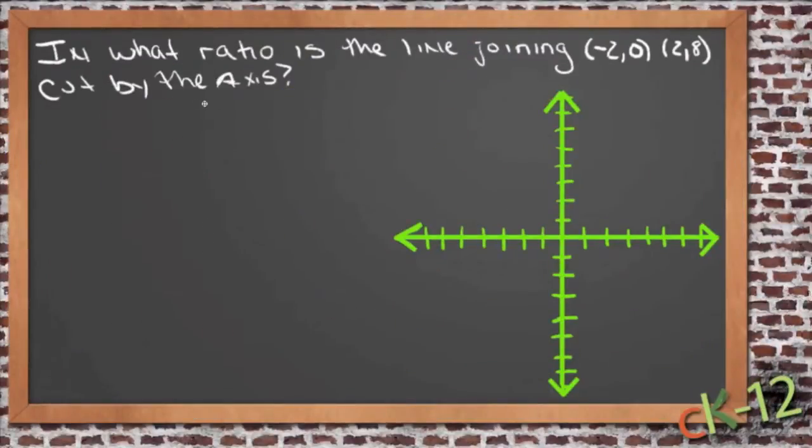Okay, so our question is, in what ratio is the line joining the point (-2,0), which would be right here, and (2,8), which would be right here